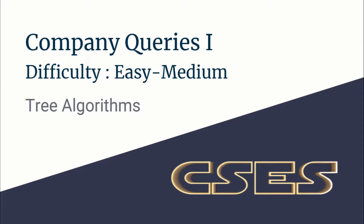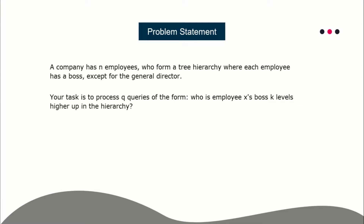Hello guys, this is Code and Code, and this is a video tutorial for the problem 'Company Queries First', taken from the CS Tree Algorithm series. The problem says a company has N employees forming a tree-like hierarchy, where each employee has a boss except for the general director, who is the root. You have to process Q queries of the form (x, k): for employee x, who is the boss k levels up in the hierarchy? For example, for node 2, the boss two levels higher is node 4.